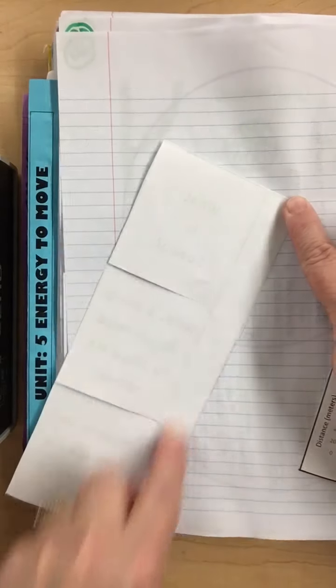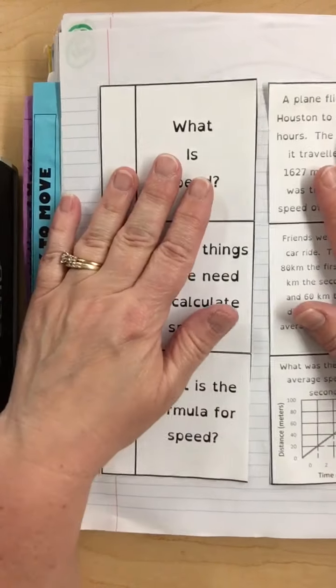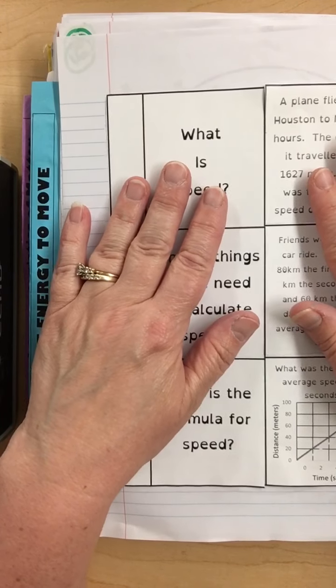So, now we're going to put glue right on the back of the strip. And we're going to glue these side by side in our notebook, just like this.